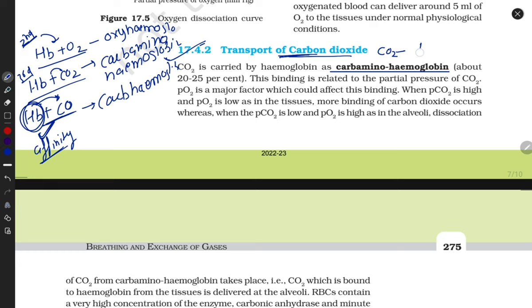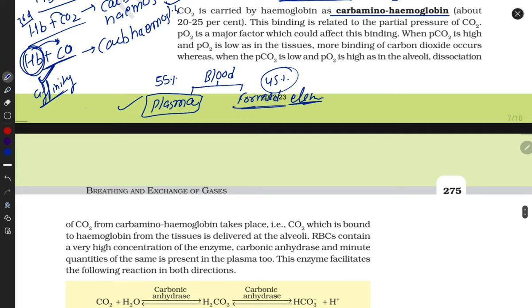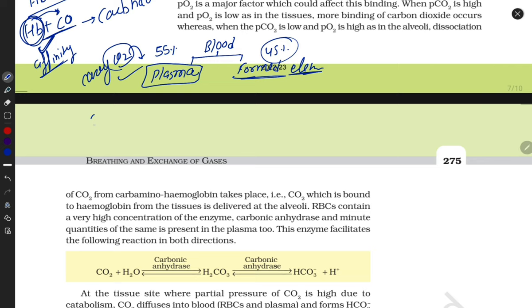Some percent of carbon dioxide will dissolve in plasma. Blood is made up of two components: plasma and some formed elements like RBCs. Blood contains 55% plasma and 45% formed elements. Plasma can carry CO2 because CO2 dissolves in plasma, but oxygen does not dissolve properly in plasma.